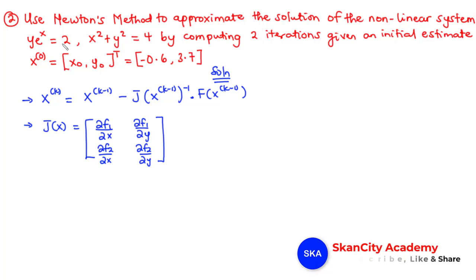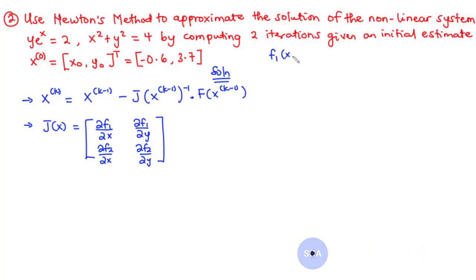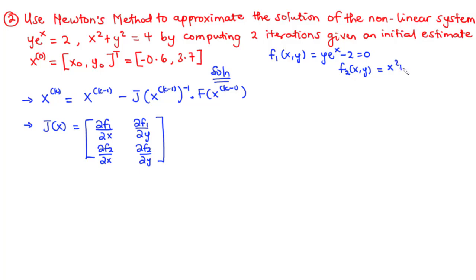We assume the first function is f1(x,y) = y times e to the power x minus 2, set equal to zero. The second function is f2(x,y) = x squared plus y squared minus 4, also equal to zero.